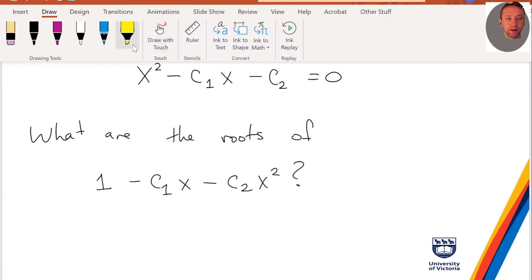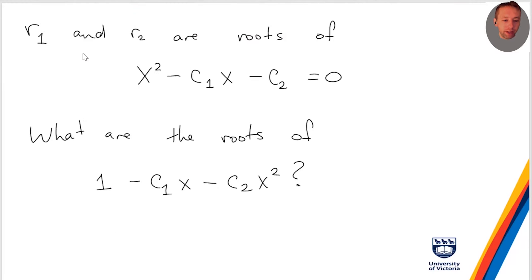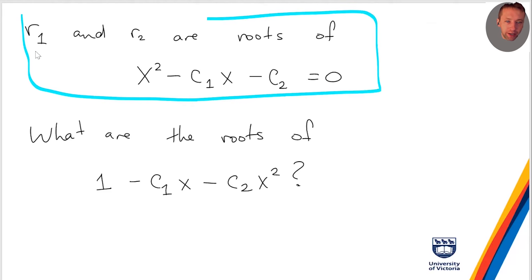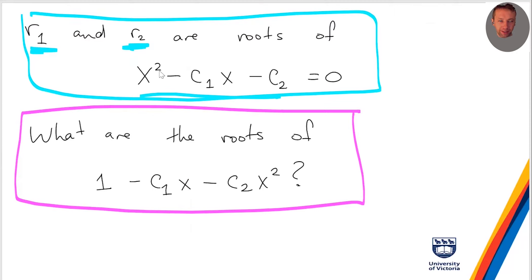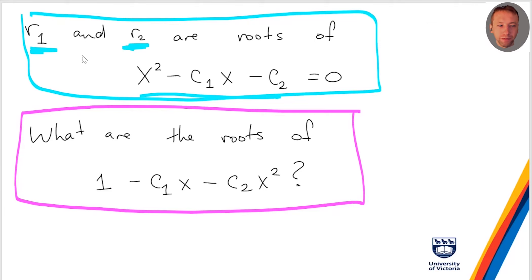So here's my question — and this is maybe tricky, but you can work it out. My characteristic equation is x² minus c1·x minus c2, and r1 and r2 are its roots. What are the roots of the denominator polynomial 1 minus c1·x minus c2·x²? Given that I know the roots of the characteristic equation, which is kind of the same thing except the x² is in the wrong place — I claim the roots of the denominator are 1/r1 and 1/r2.